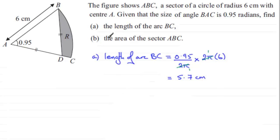Now for part B, we've got to work out the area of the sector ABC. And again, the area of the sector is going to be a fraction of the area of a circle. We'll just say area of sector ABC equals.